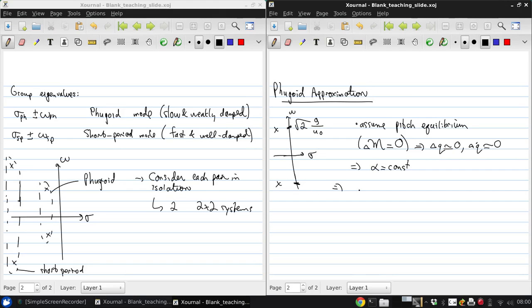So that means that delta W, which is u0 for small angles of attack times delta alpha, is zero.